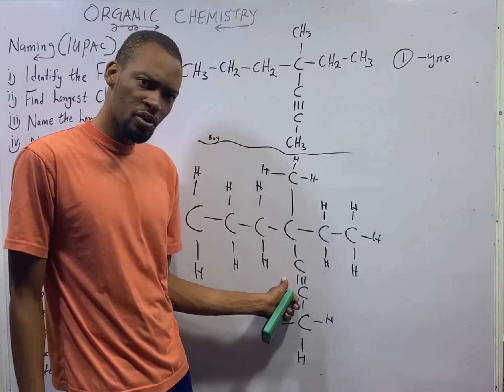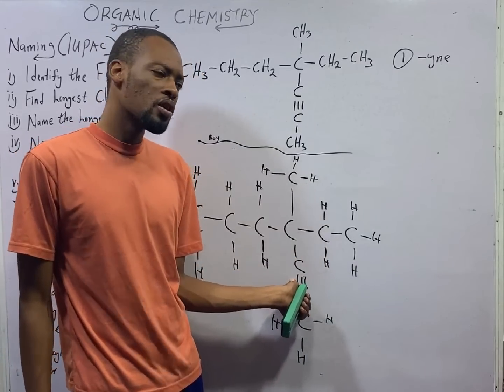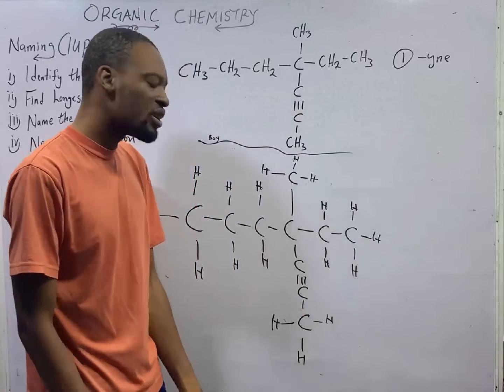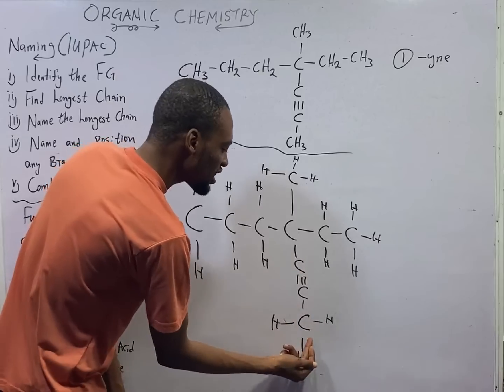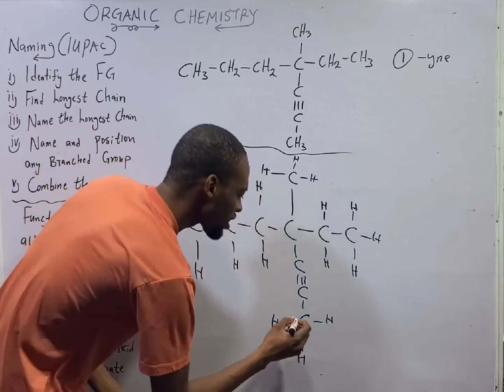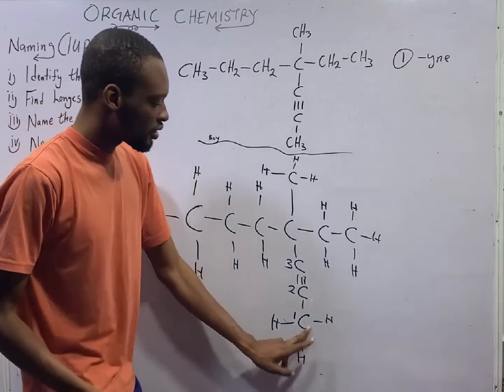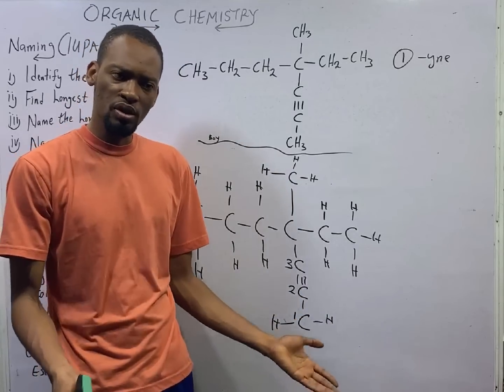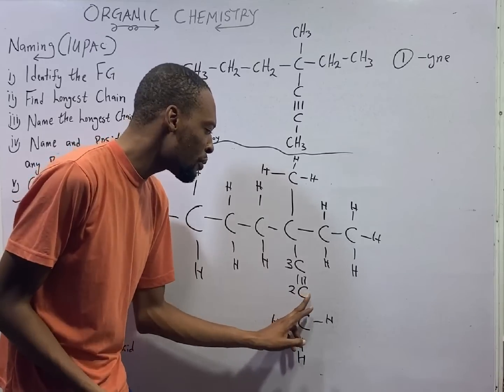Since triple bond is the functional group, our longest carbon must be the one that will give this functional group the lowest number. So carbon carrying the functional group should have the lowest number. In whatever you do, whichever direction you choose to go later, you must definitely start from here. Because when you start counting from here, this carbon carrying the triple bond will have the lowest number. Let's call this carbon 1, let's call this carbon 2, let's call this carbon 3. With this numbering, the carbon with the triple bond is on carbon 2.